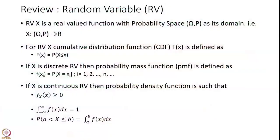Let us review what we did in the past. A random variable was defined as a real-valued function with probability space omega and p as its domain. There is always a cumulative distribution function, capital F of X, attached to any random variable X, defined as F of X equals the probability that X is less than or equal to small x.